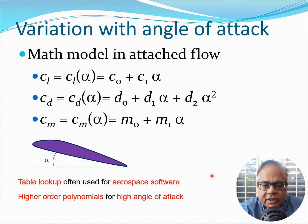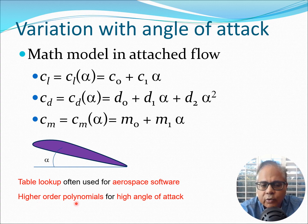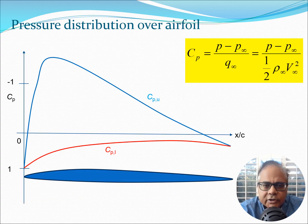Do remember that in reality things are more complex. We have assumed that Reynolds number and Mach number are at certain fixed values, but in many cases you may have to consider that Mach number and Reynolds number are also changing. You can use a table lookup approach where you have values of these parameters and simply read the corresponding values. Most people prefer table lookups because it's easy to do interpolation to find CL, CD, CM for any particular alpha value.